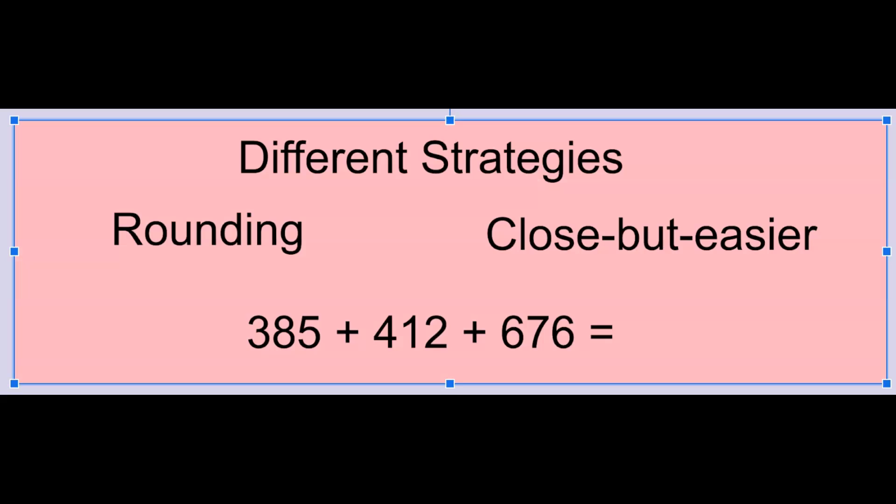So you can use close but easier numbers to make an estimate. And you could also use rounding. And you could round to the place of your choice, depending on how big the numbers are, or depending on the story.